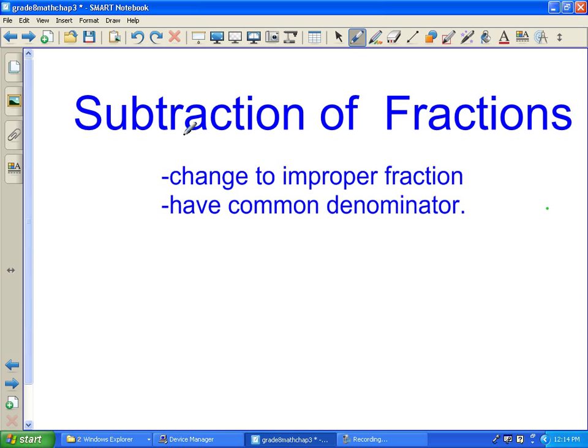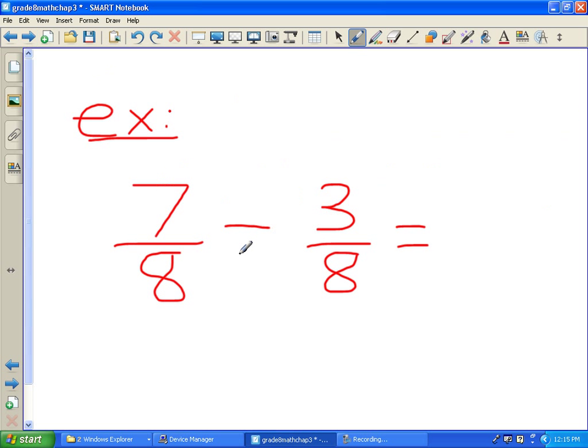For subtraction of fractions, it's done exactly the same way. We have to have a common denominator, and we've got to change it to an improper fraction. So in this one, again, it's just look at the bottoms. The bottoms are the same when you're taken away, so it's going to be straightforward. Seven take away three is four over eight. But you know four-eighths can be reduced to one-half, because that is a half. Divide this by four, and divide this by four.